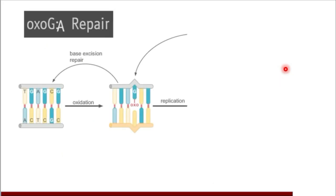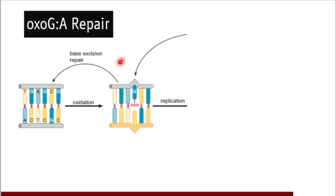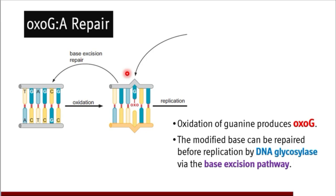Coming to OXO-G2A repair: a very common phenomenon in DNA is that nucleotides get oxidized, and the most common nucleotide that gets oxidized is guanine, forming OXO-G. If DNA replication has not yet occurred, OXO-G is removed by the DNA glycosylase mechanism via the base excision pathway — which removes the base, then the sugar, followed by DNA polymerase filling the gap, and DNA ligase completing the repair.